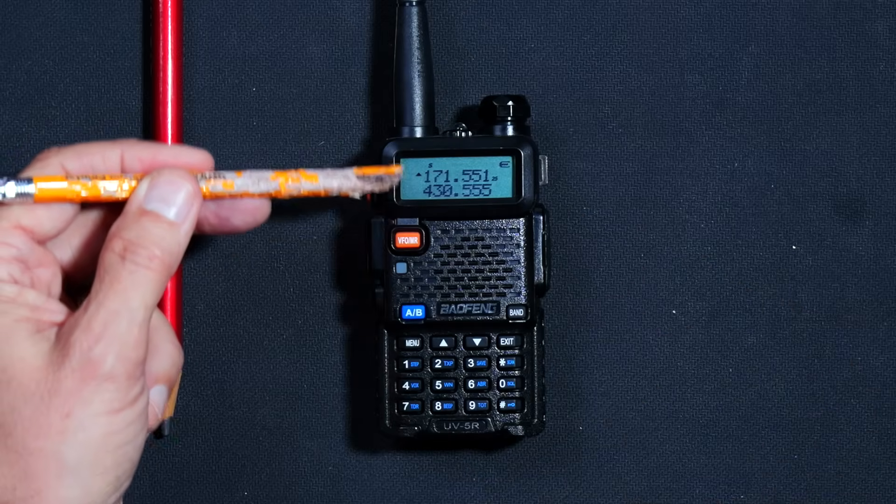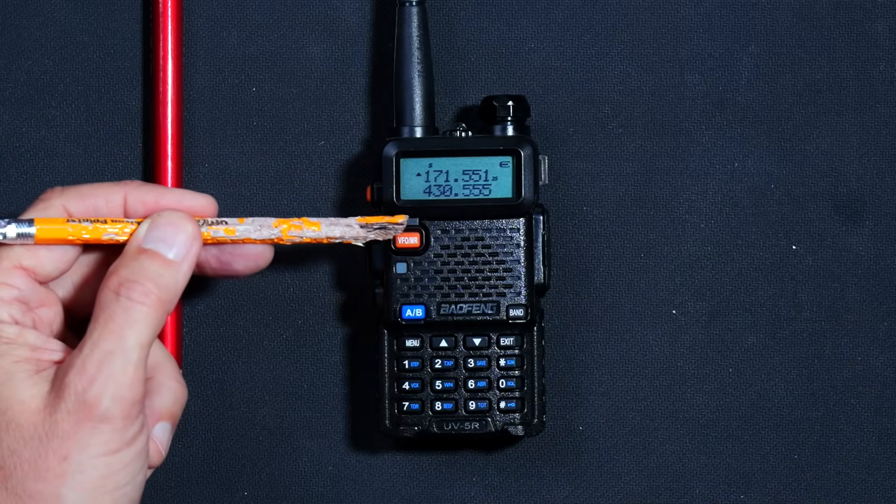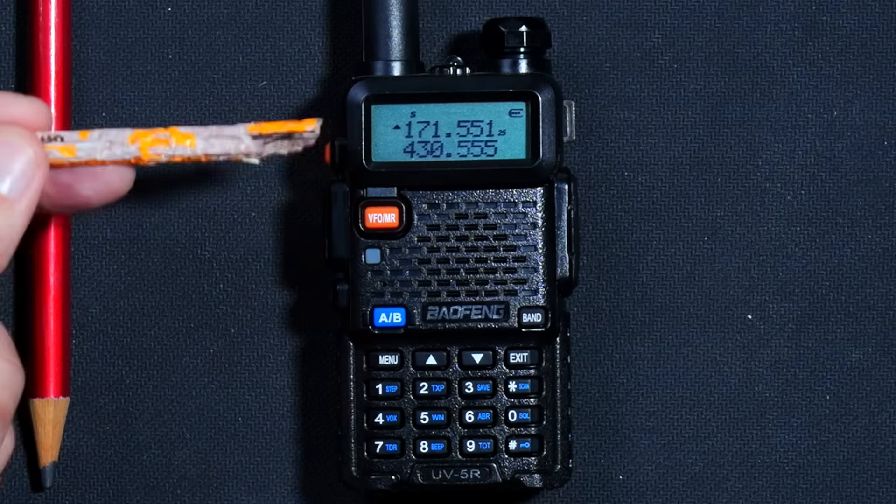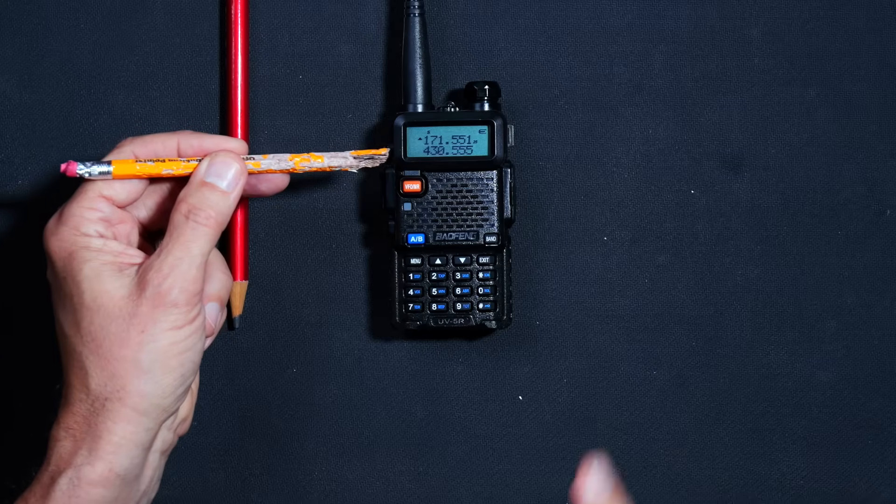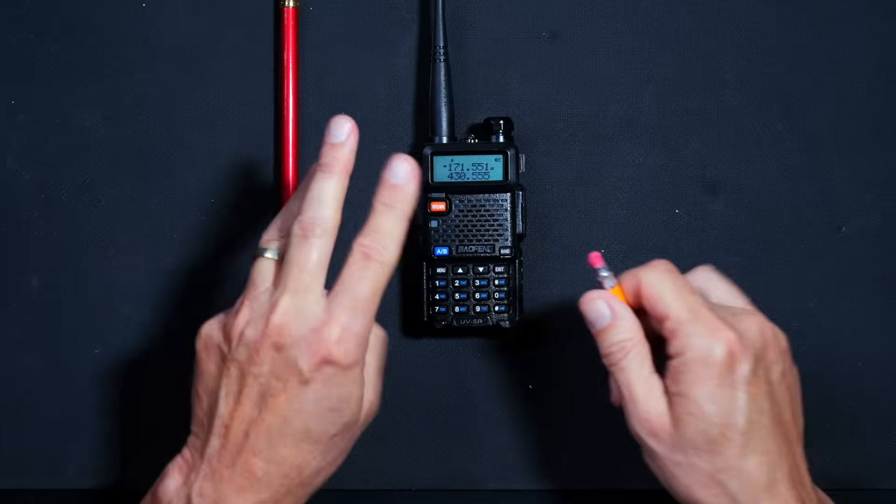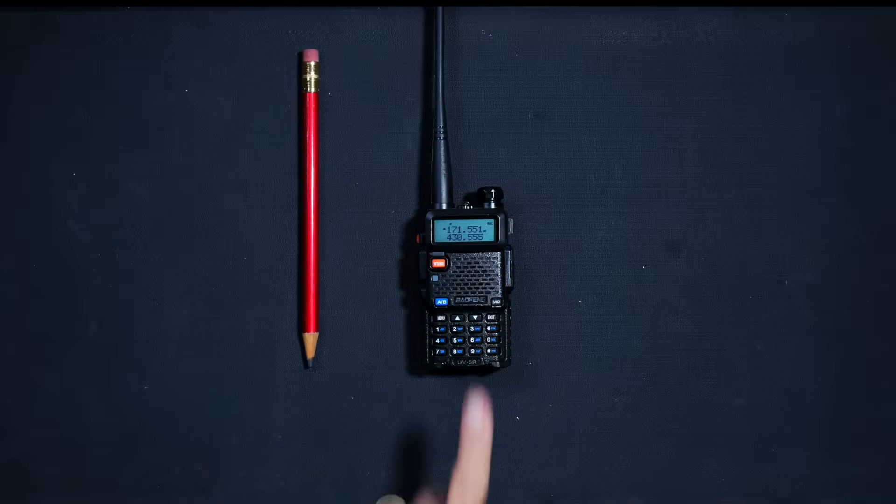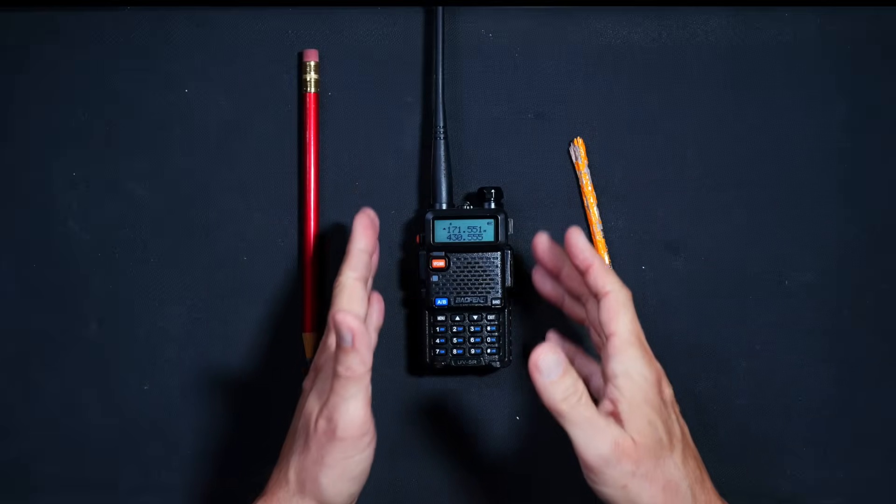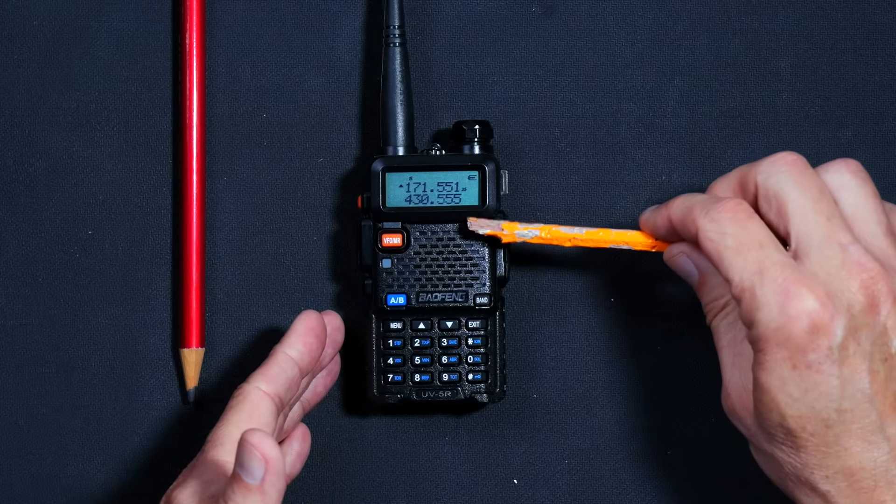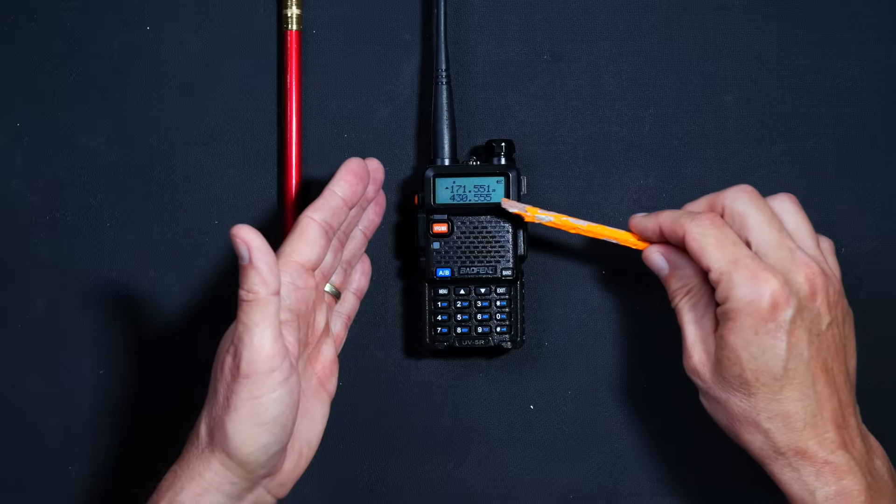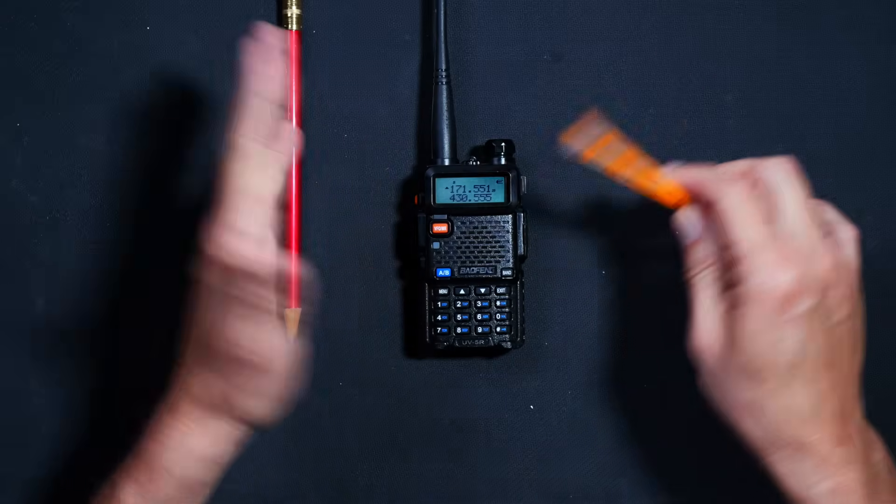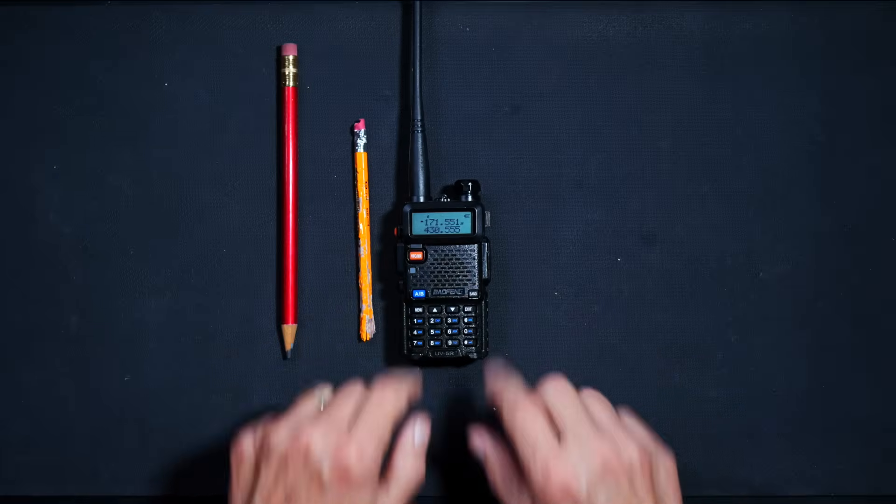You may also notice that the screen displays two distinct lines. Radio experts refer to these two lines as line A and line B. If the option is enabled, this radio will allow you to listen to two different frequencies at the same time. However, even if you have the dual watch option disabled, you will still see two lines. This radio and many similar radios always display two lines. You cannot make it display only one line. For that, you will need to buy a better radio.